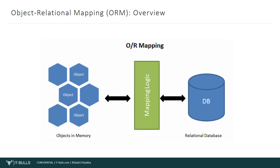Because of ORM, we can forget about relational databases and not be bothered about how they work inside. Of course, we have to understand how they work, but during the actual coding and programming we are not bothered about operating database tables. We think only about objects and their structure, and ORM will take care of everything needed to properly map our objects with tables in the database.